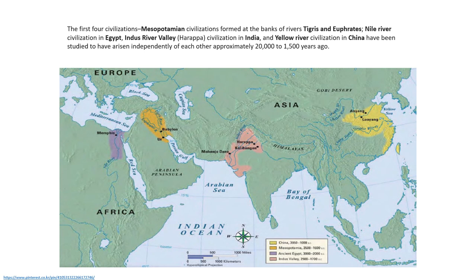It is interesting and important to know where we came from and even more interesting to know where we are heading. Here we can see the four major civilizations of the world: the Mesopotamian civilization on the banks of the Tigris and Euphrates rivers, the Nile River civilization in Egypt, the Indus Valley or Harappan civilization in India, and the Yellow River civilization in China. All these civilizations arose independently approximately 20,000 to 1,500 years ago. They flourished at or near river valleys because rivers provided water for irrigation, domestic use, transportation, and overall development.